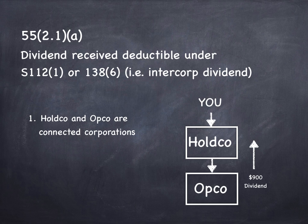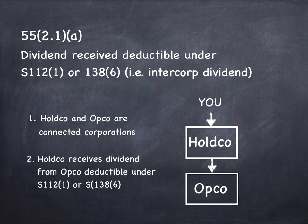Now, I'm not going to get too much into Section 112.1, but if HoldCo and OpCo are connected corporations — connected corporations meaning 10% votes and value, or HoldCo controls OpCo — and if HoldCo is receiving dividends from OpCo deductible under 112.1 or 138.6, then that's what 55.2.1(a) describes to make Section 55 apply to you. In other words, if you don't have two companies and you don't have dividends deductible under 112.1, this is not of any concern to you.